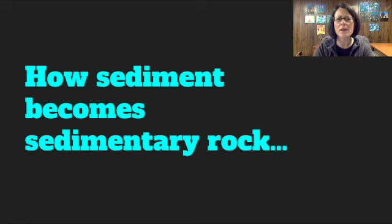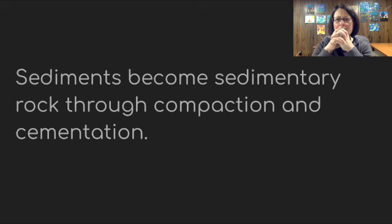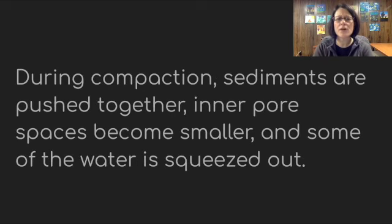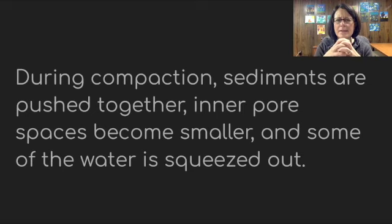How does sediment become sedimentary rock? Sediments become sedimentary rock through compaction — the pressing together — and cementation. During compaction, sediments are pushed together, inner pore spaces become smaller, and some of the water is squeezed out. Basically, it takes muddy substances and, like you've seen with mud, compacts them so that water is squeezed out.